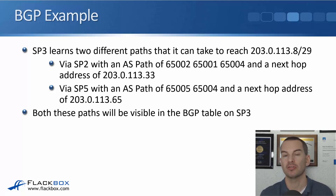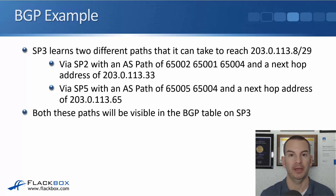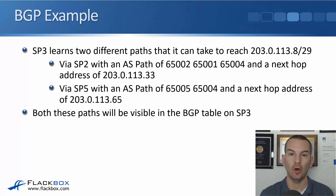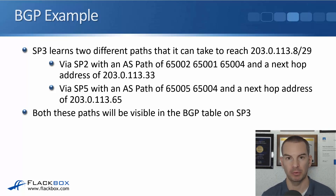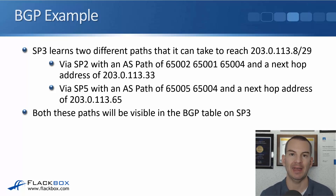The router chooses the shortest path based on the number of ASes. This is similar to RIP using the shortest hop count, but rather than a hop being an individual physical router, a hop is the entire AS of another service provider. The router doesn't care about individual physical hops inside that AS — it sees the entire AS as a single hop.